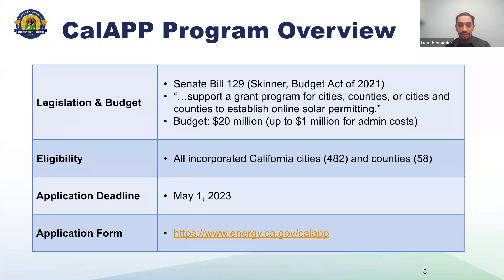The application is very short and intended to be simple for any authorized representative of a city or county to complete and submit. More information, including access to the application form, is available on the program webpage. Funds are reserved on a first-come, first-served basis following approval of a complete application. Although the application deadline is May 1, 2023, grant funds do not need to be liquidated until 2027, so there's plenty of time to complete the grant tasks after being awarded.